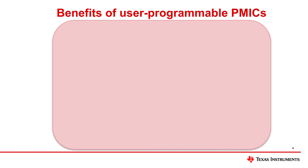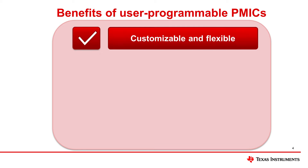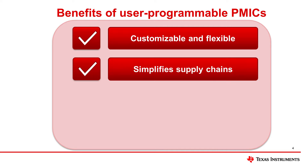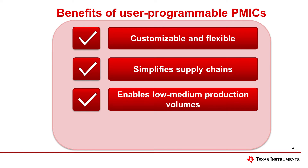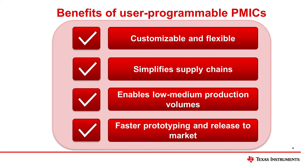User programmable PMICs are useful for situations where customizability and flexibility are top priorities, such as when powering FPGAs. These PMICs are reusable across different projects. A single orderable part number can assume the role of several different part numbers, simplifying supply chains. They also enable low to medium production volumes, and programming can be done by the customer, which means faster prototyping and release to market.